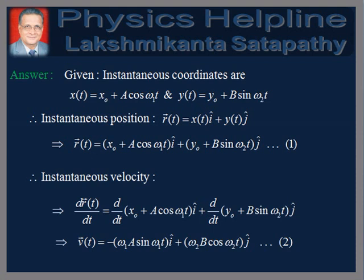The instantaneous velocity of the particle is obtained by differentiating R(T) with respect to time, which gives V(T) equals minus ω₁A sin(ω₁T) î plus ω₂B cos(ω₂T) ĵ.